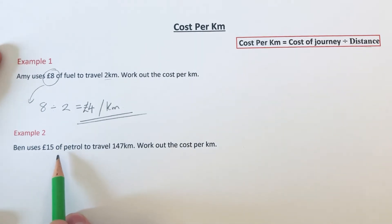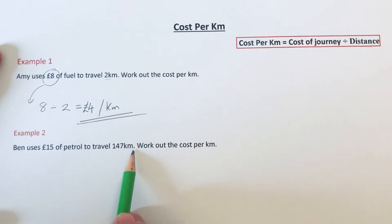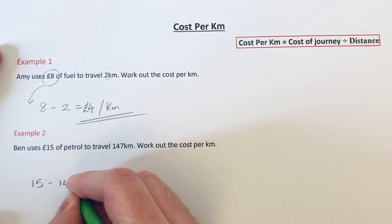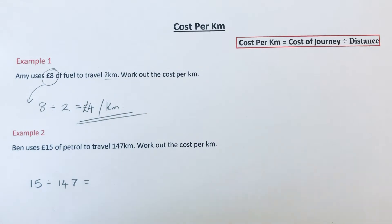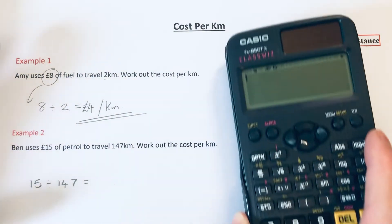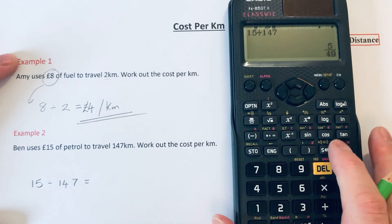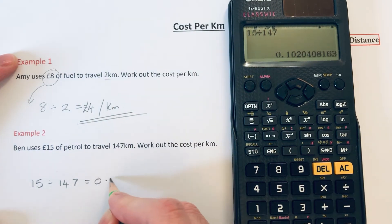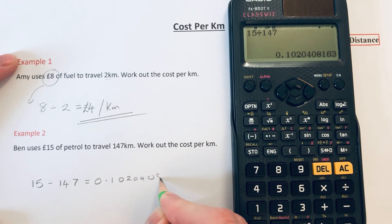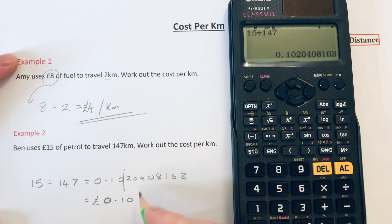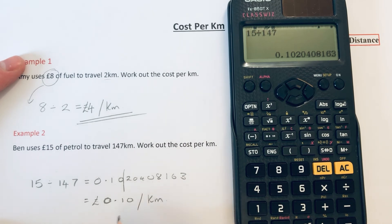Ben uses 15 pounds of petrol to travel 147 kilometres, so again we've got to work out the cost per kilometre. We just need to divide the money, which is 15 pounds, by how many kilometres we are travelling, which is 147. So 15 divided by 147 gives us 0.1020408163, and rounding to two decimal places that is 0.10 per kilometre, so that is 10p per kilometre.